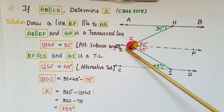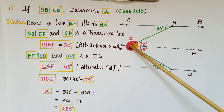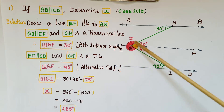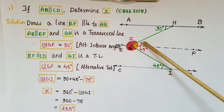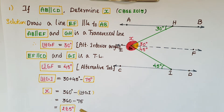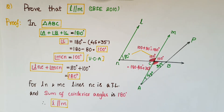Now we have to find x. This is a complete angle of 360 degrees. So x equals 360 minus the sum of the two angles: x = 360 − (30 + 45) = 360 − 75 = 285 degrees. So x is 285 degrees. This question was asked in CBSE 2010. Next: prove that l is parallel to m.